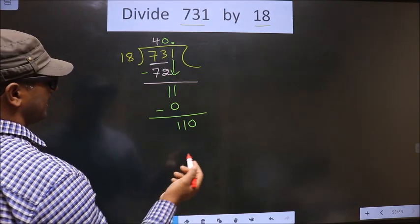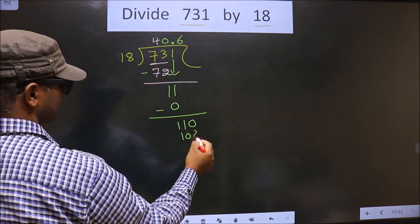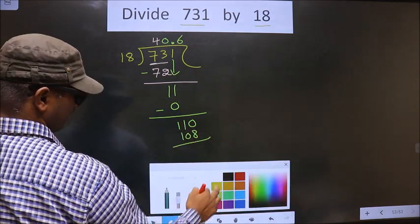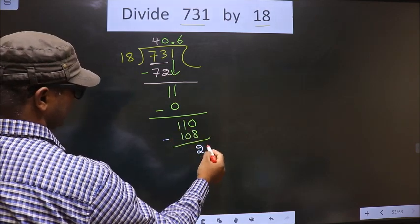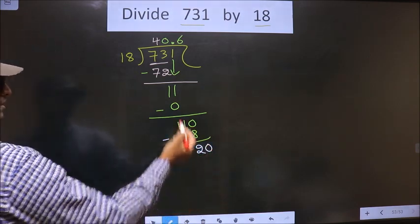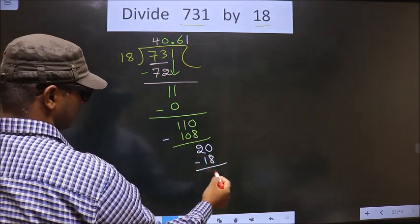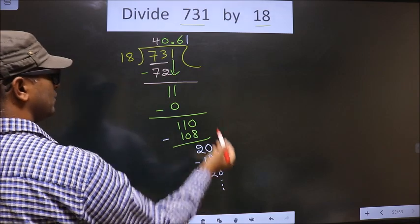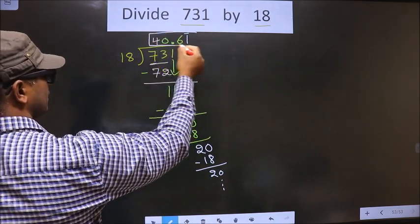Now you subtract, you get 2. 2 is smaller than 18, we take 0. So now 18 times 1 is 18. Subtract, 20 minus 18... it goes on, we get a bar on 1. So this is our quotient.